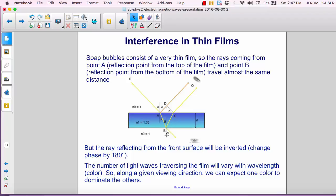But the ray that reflects from the front surface will be inverted. The phase will change by 180 degrees. This occurs whenever light is reflected off of a material with a higher refractive index.